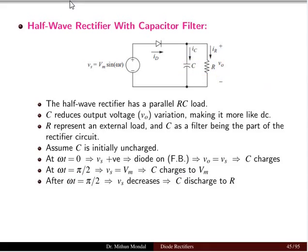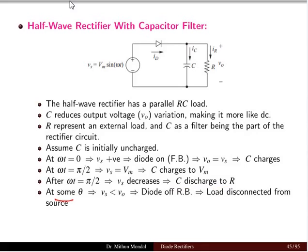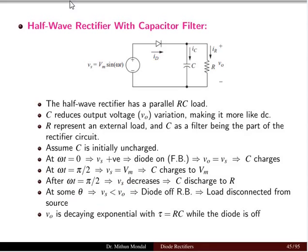After π/2, the voltage decreases and the capacitor starts discharging its stored potential to the resistor. At a certain angle θ, the source voltage is less than Vm, so the diode becomes reverse biased and disconnected from the source. The output voltage then decays exponentially with the RC time constant while the diode is off.